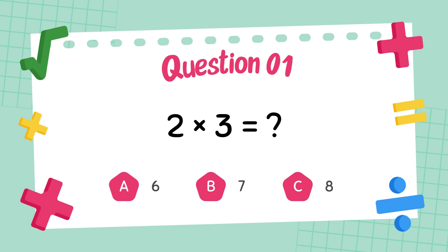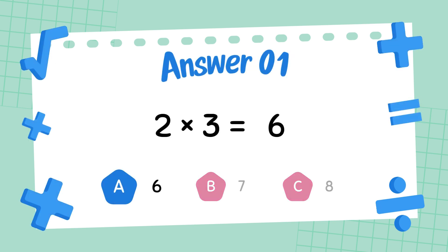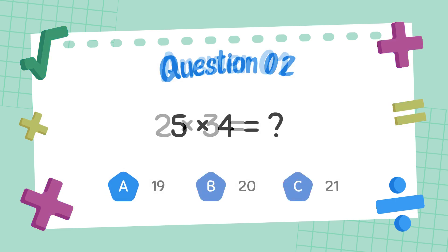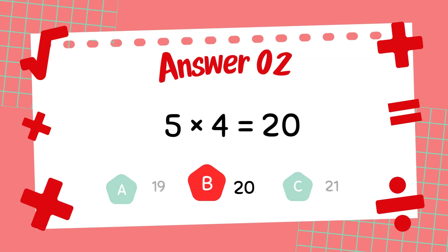What is 2 times 3? The answer is 6. What is 5 times 4? The answer is 20.